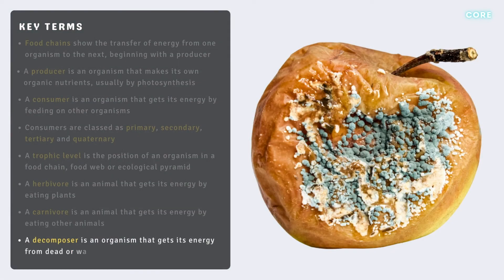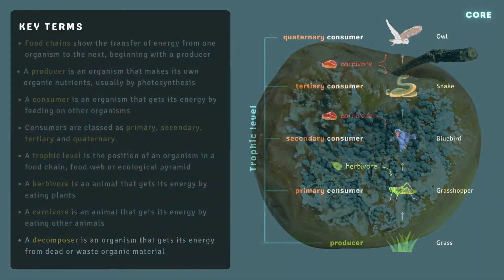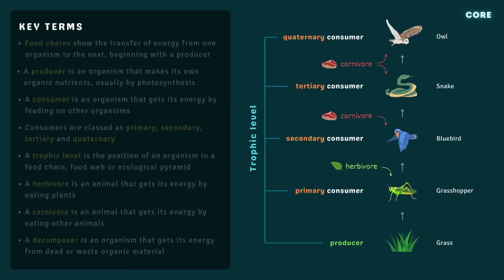Organisms that obtain their energy from dead or waste organic material are called decomposers. In this food chain, the grass obtains its energy from the sun by photosynthesis. Some of the chemical energy stored in the grass is transferred to the grasshopper, then to the bird, then the snake, and finally to the owl. When the owl dies, decomposers break down its body, making nutrients available to producers.